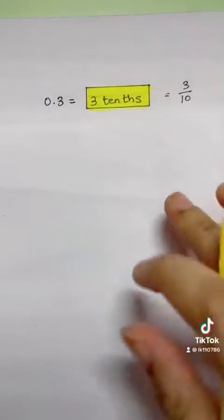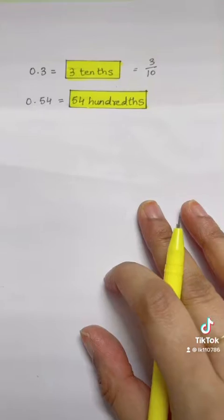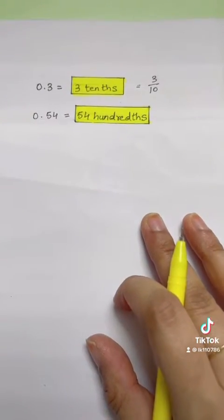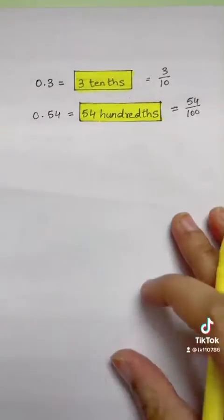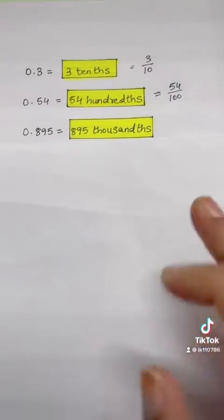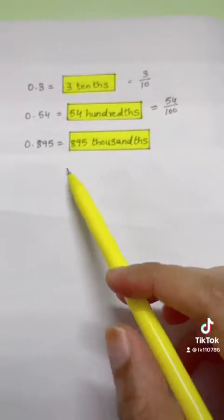Next we have 0.54, which is read as 54 hundredths, as the last digit 4 is in the hundredths place after the decimal and can be written as 54 hundredths. We have 0.895, which is read as 895 thousandths since the last digit 5 is in the thousandths place.